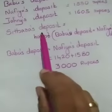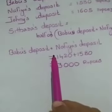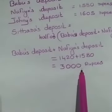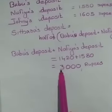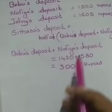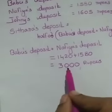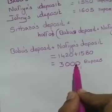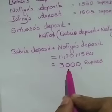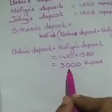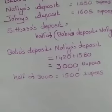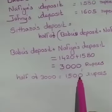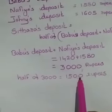What about Sitara's deposit? It is half of 3000. What is the half of 3000? What is the half of 30? Yes, 15. So half of 3000 is 1500. That means Sitara's deposit is 1500 rupees.